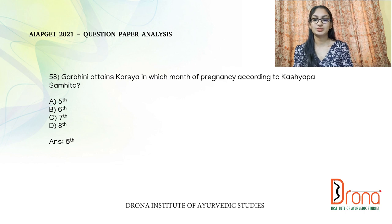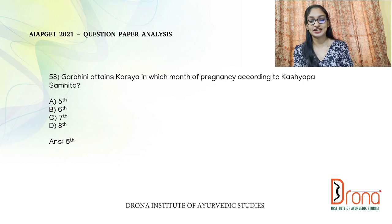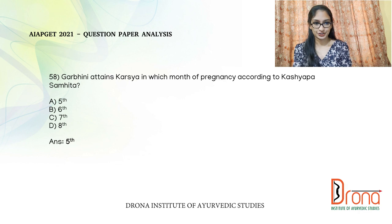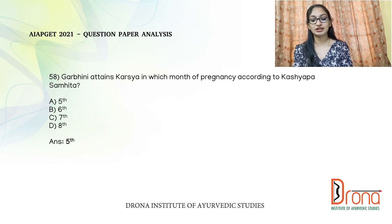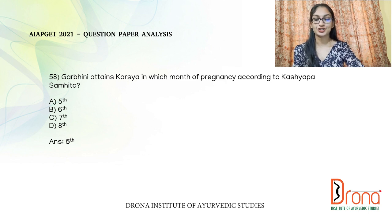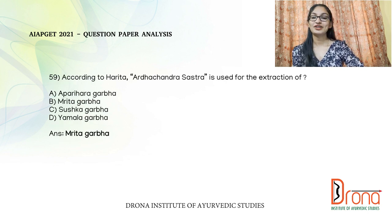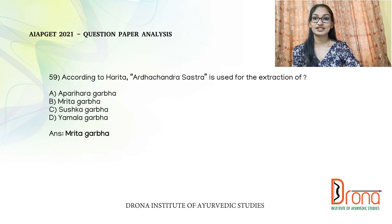The next question: in which month of pregnancy does garbhini attain kashyam according to Kashyapa Samhita? Kashyapa Samhita is almost similar to Charaka Samhita. Kashyapa Acharya has told that in the fourth month there will be guru ghatratvam adhikam, fifth month kashyam, sixth month shramo adhikam, and seventh month the garbhini will be nitya klanta. So garbhini attains kashyam in the fifth month of pregnancy.